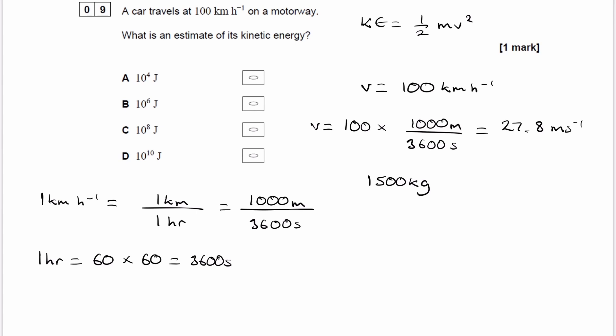So then if we put this into our kinetic energy equation, a half times 1,500 times v squared, then this gives us about 5.8 times 10 to the 5.